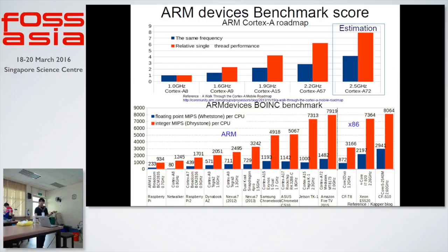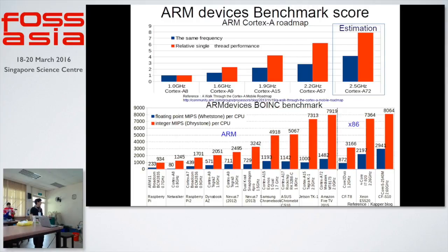This is the ARM benchmark score from my Boink benchmark, and this is the ARM Cortex-A roadmap. The latest ARMv8 benchmark score is 1700. Amazon Fire, Jetson TK1, Tegra K1, and Cortex-A72 are included. Intel devices from three years ago have the same specs as current ARM devices.